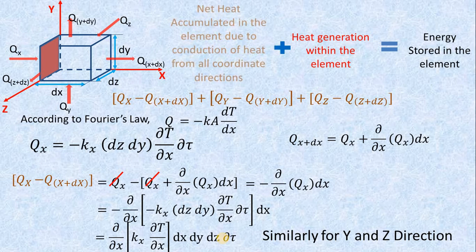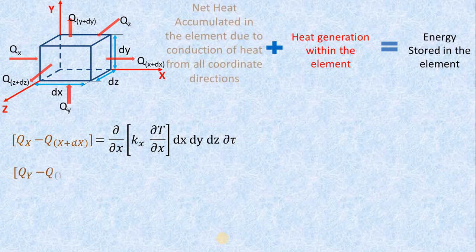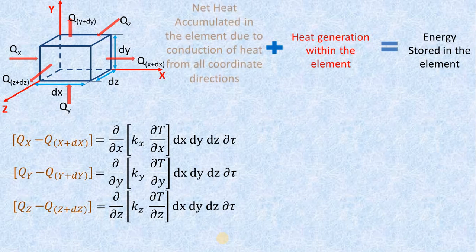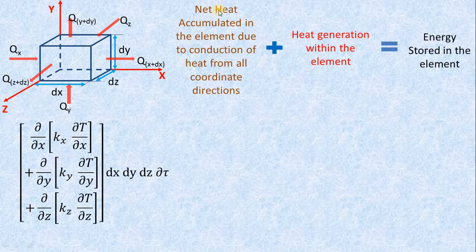Similarly, we find the expressions for y and z directions. Adding all three gives the total net heat accumulated: [(∂/∂x)(Kx·∂T/∂x) + (∂/∂y)(Ky·∂T/∂y) + (∂/∂z)(Kz·∂T/∂z)] times dx·dy·dz·dτ. This is the net heat accumulated in the element due to conduction from all coordinate directions.